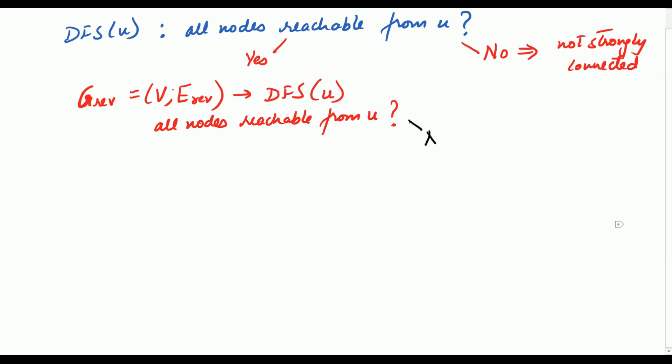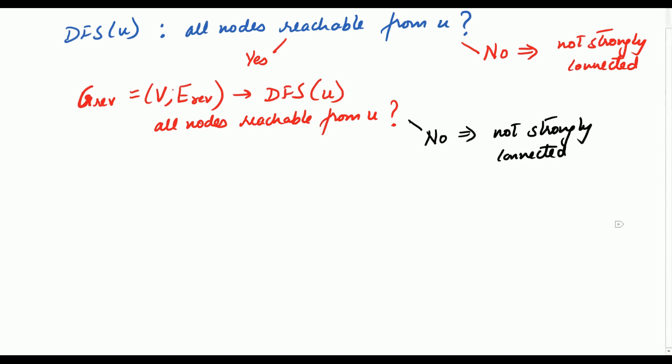Suppose the answer to this question is no — the matter ends. You can straight away conclude that the graph is not strongly connected, because you would get a pair of nodes which are not mutually reachable. So even if the answer to one of these two questions — in the context of the original graph or the reverse graph — is no, then the graph is not strongly connected.